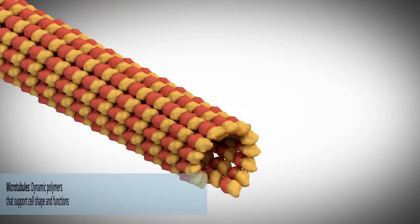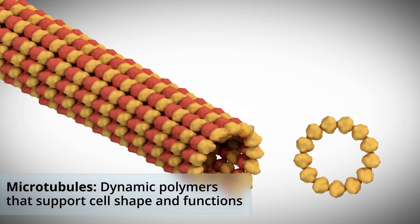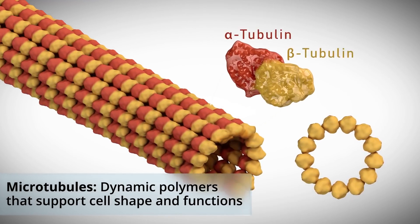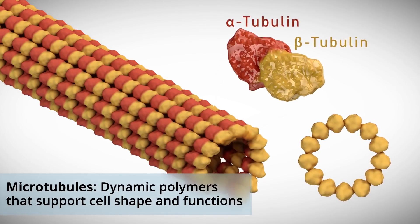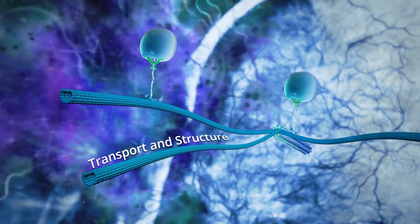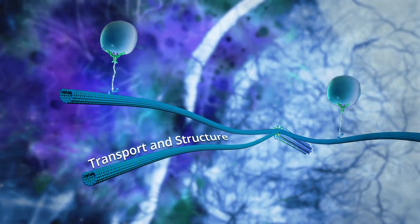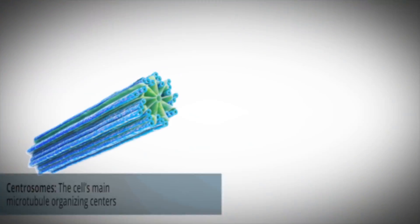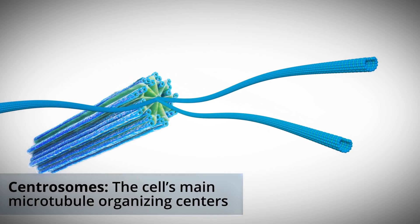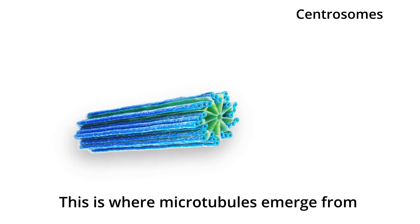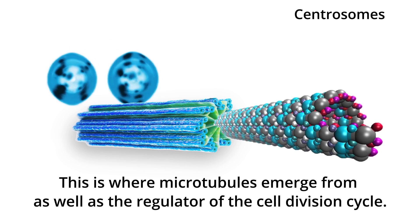Microtubules are very important parts of the cytoskeleton. These highly dynamic polymers made of a protein called tubulin are very important for a number of cellular processes, such as vesicle trafficking and cell division. The cell's main microtubule organizing center is called the centrosome, where microtubules emerge from, and it is also the regulator of the cell division cycle.